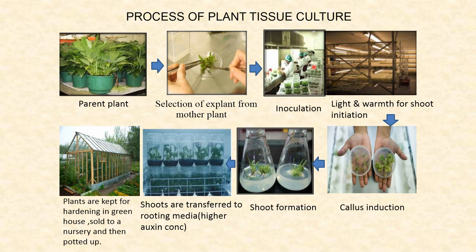Later on, this culture will be incubated in optimum temperature and light for shoot initiation. Later, the callus induction takes place, then shoot formation takes place. These shoots are transferred to rooting medium, which will have a higher concentration of auxin. Later, the plants are kept for hardening in greenhouse, sold to nursery and then potted up.